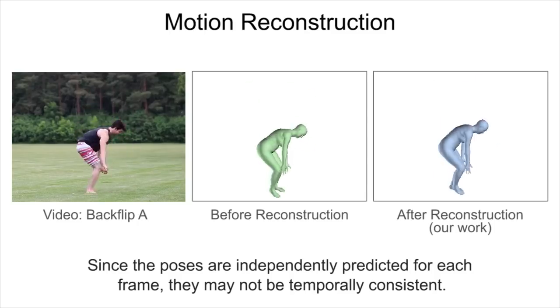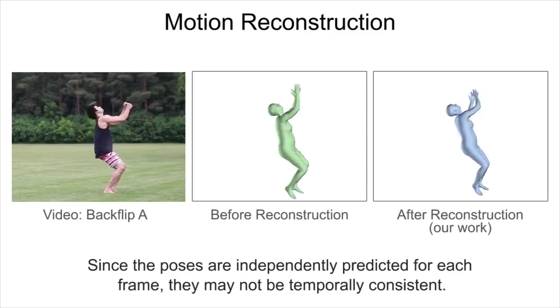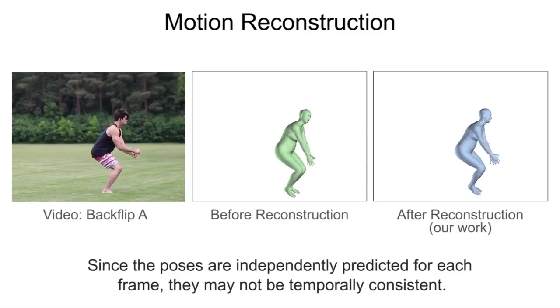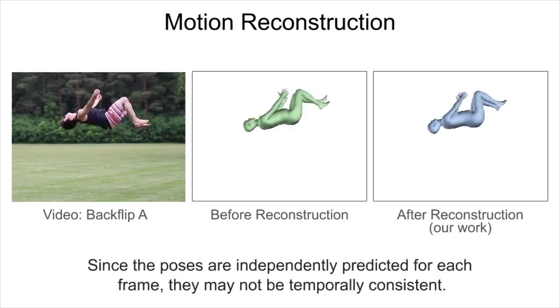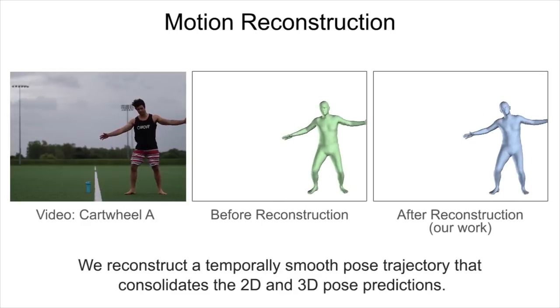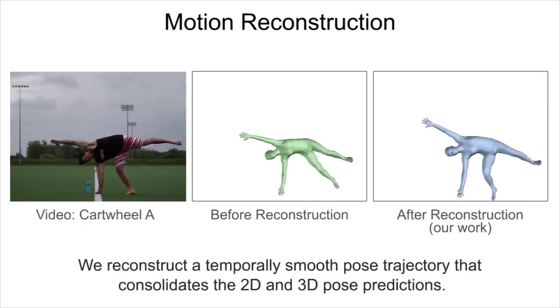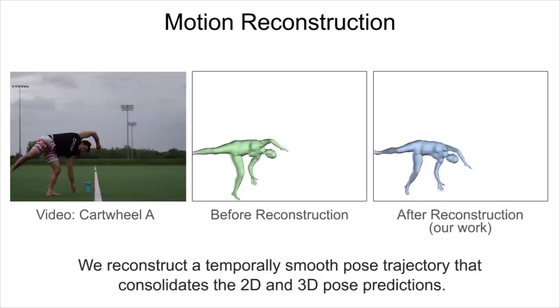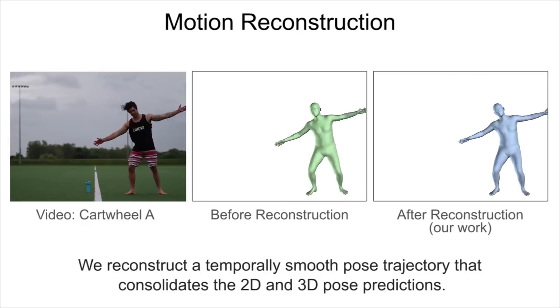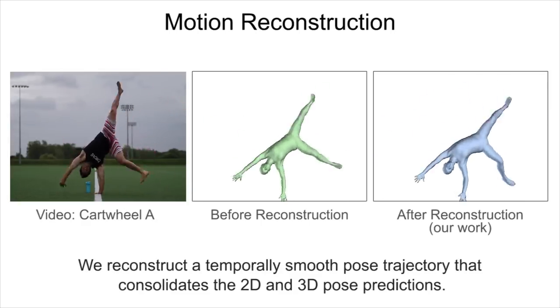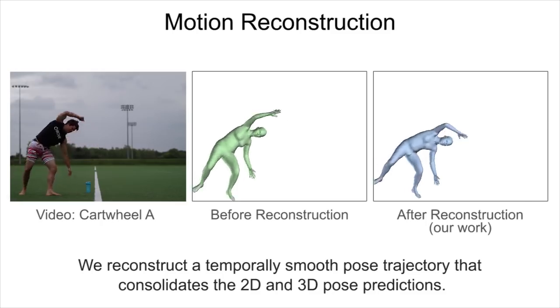Since the poses are independently predicted for each frame, they may not be temporally consistent. We construct a temporally smooth pose trajectory that consolidates the 2D and 3D pose predictions.